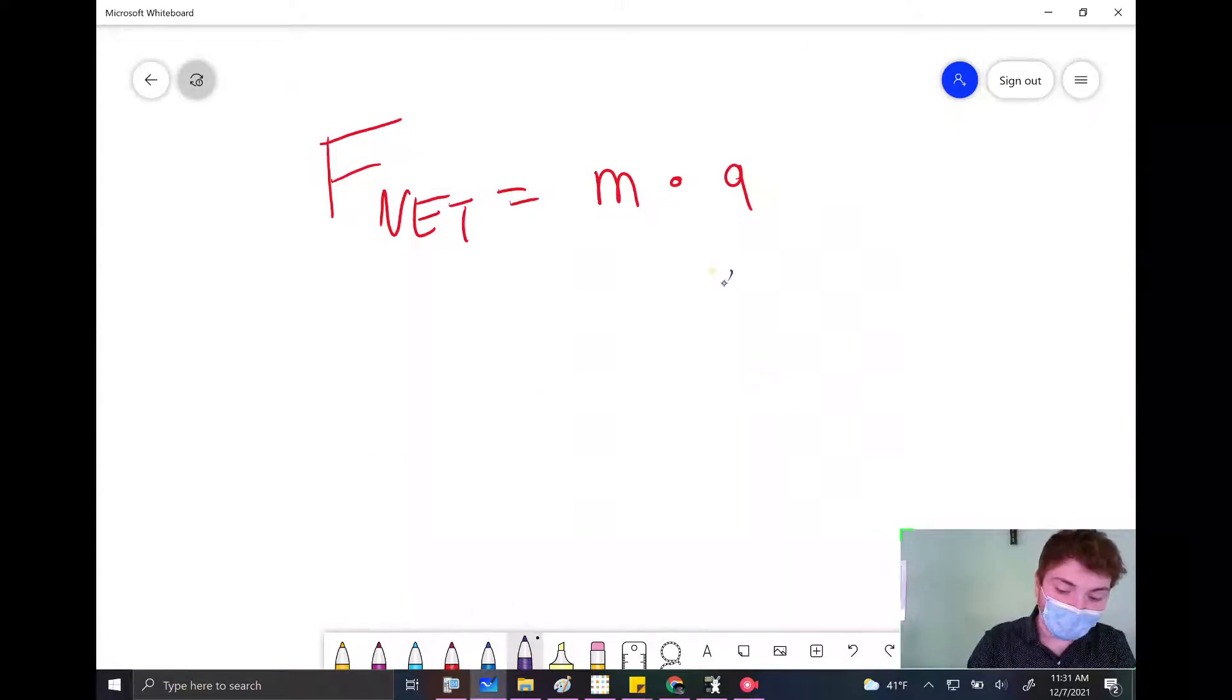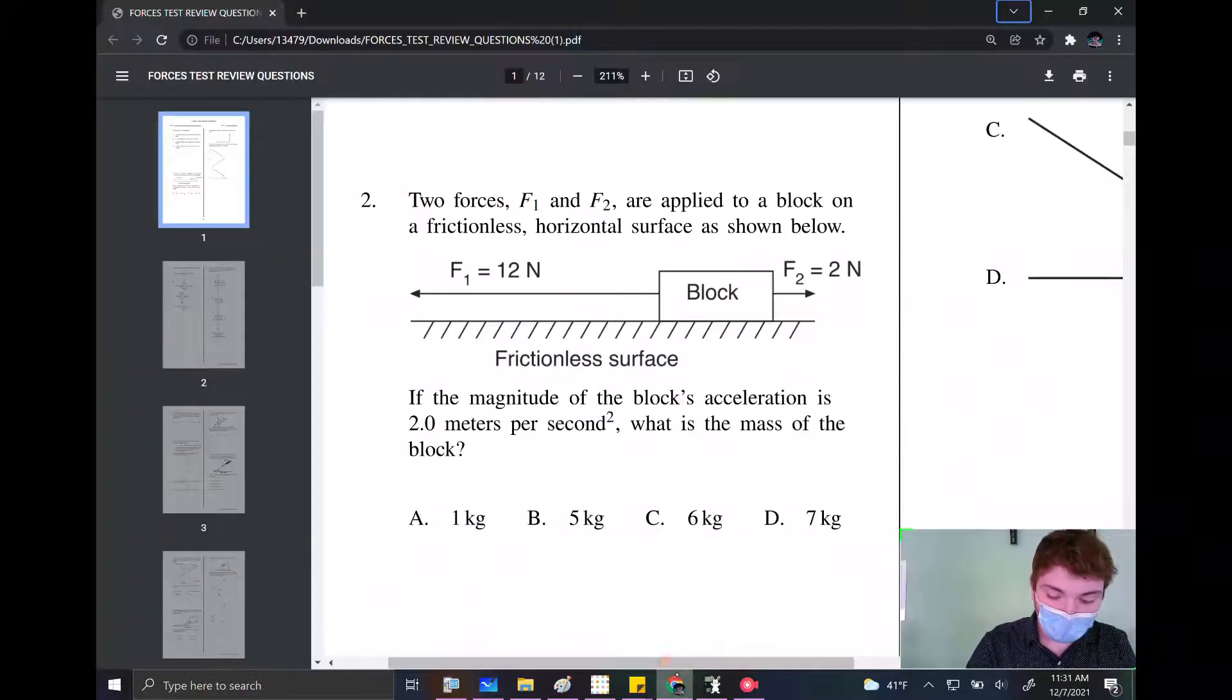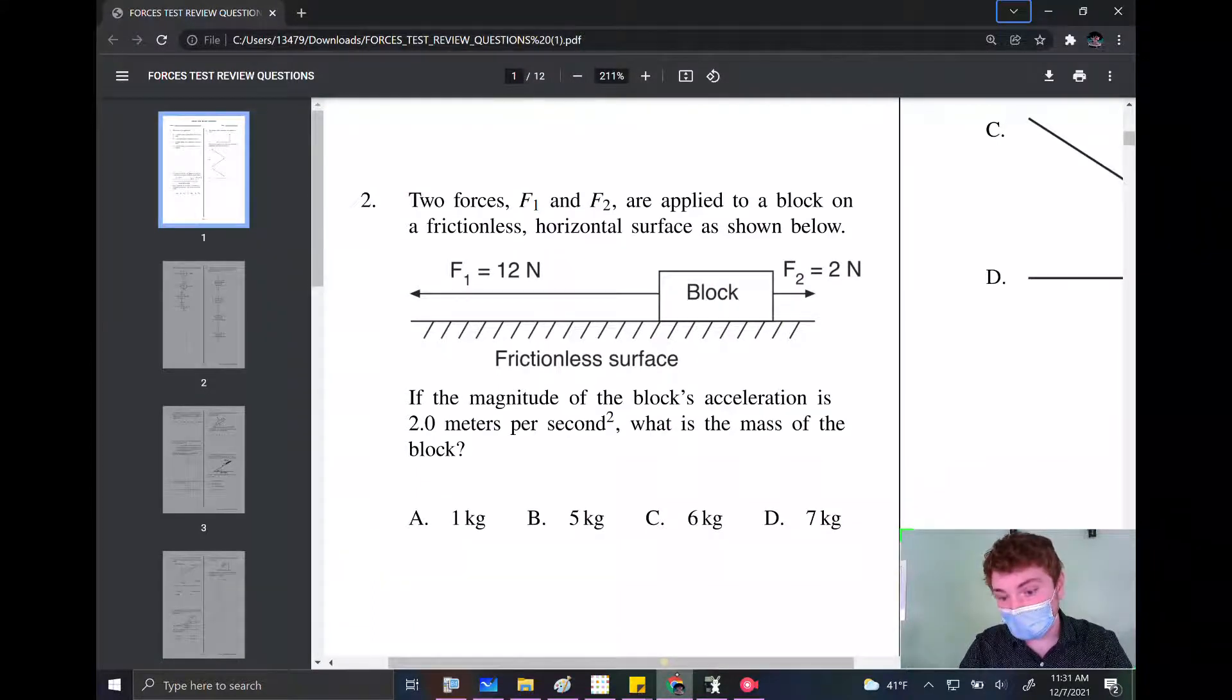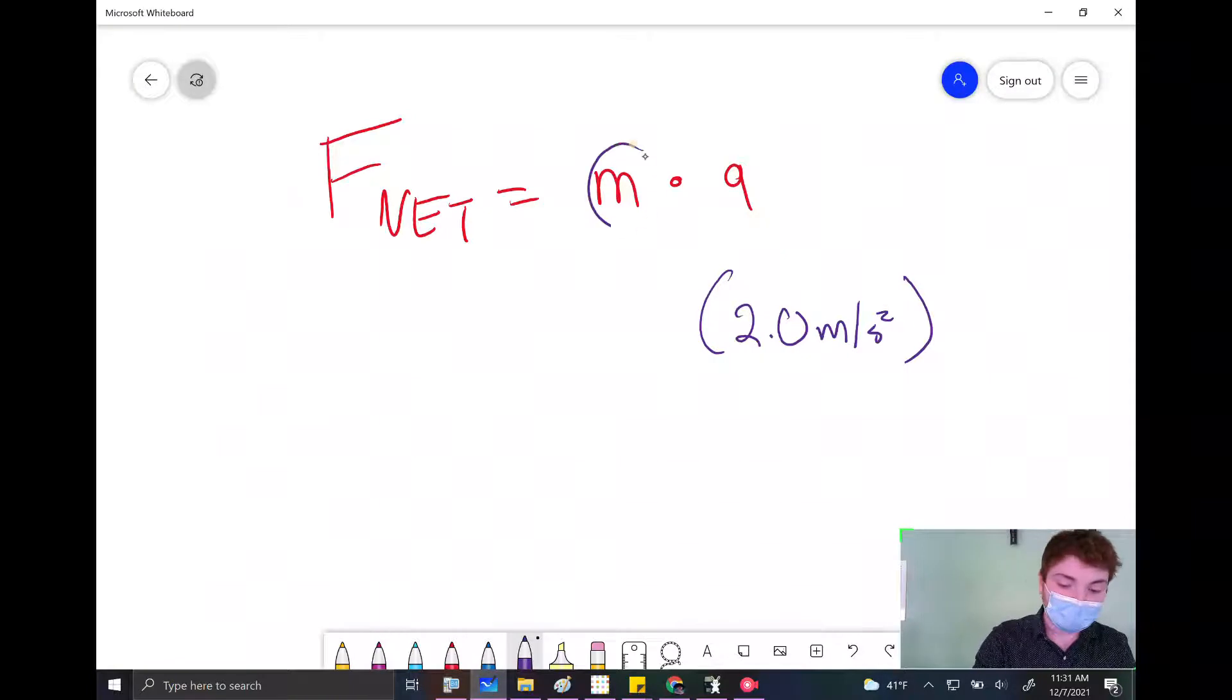So here, they give me an acceleration. They tell me the acceleration is 2.0 meters per second squared. I want to find the mass. Now, in order to find my mass M, I'm going to need to know my net force.